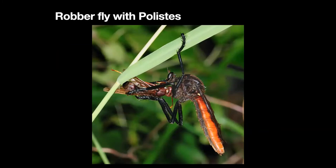Here is one of our largest robber flies, Choerades magnificus, which has captured a Polistes. It uses its legs almost like a table to hold the Polistes in place while it drains it.